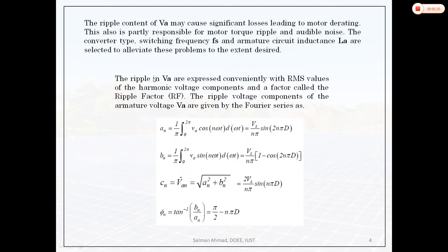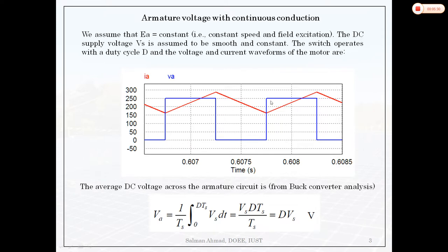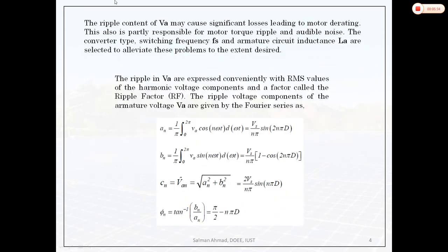The armature voltage is not constant — it has a maximum and minimum value, so there will be some ripple. The ripple content of armature voltage may cause significant losses leading to motor derating, and is partly responsible for motor torque ripple and audible noise. The converter type, switching frequency, and armature circuit inductance are selected to limit these problems to permissible values. The ripple in armature voltage is expressed using RMS values of harmonic voltage components and a ripple factor, as learned in Power Electronics Course 1. To calculate this, we first compute the Fourier series components.